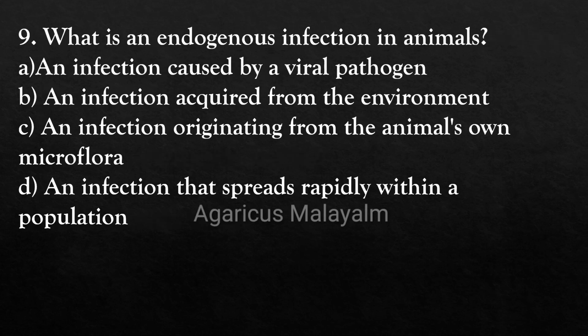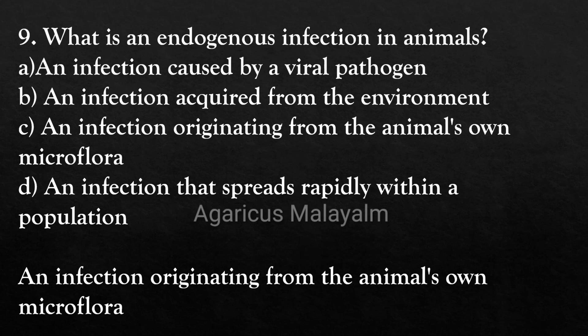Ninth question: What is an endogenous infection in animals? Option A: an infection caused by a viral pathogen. Option B: an infection acquired from the environment. Option C: an infection originating from the animal's own microflora. Option D: an infection that spreads rapidly within a population. Correct answer: Option C, an infection originating from the animal's own microflora.